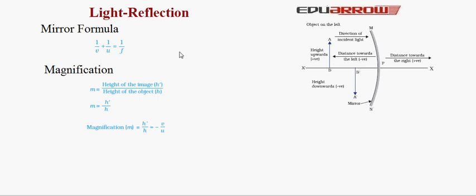Magnification means the change in size of the image with respect to the object. It is mathematically defined as M = height of image / height of object = H′/H. Magnification is also equal to −V/U, that is, the negative of the distance of image from the pole divided by the distance of object from the pole. So H′/H = −V/U.